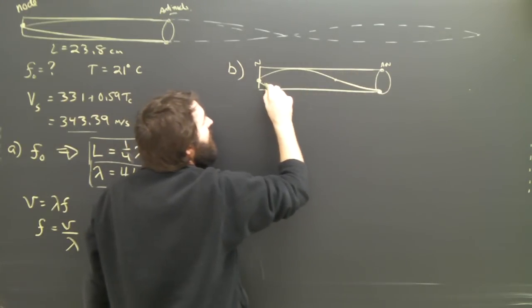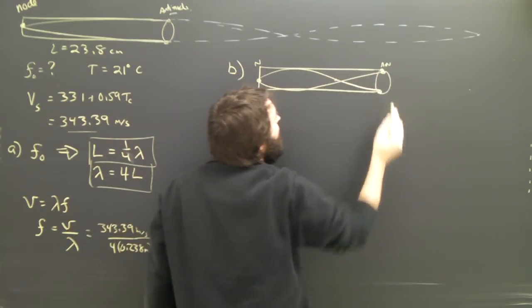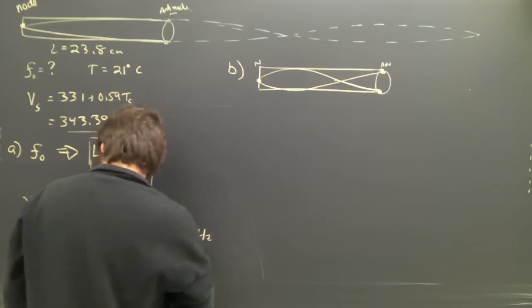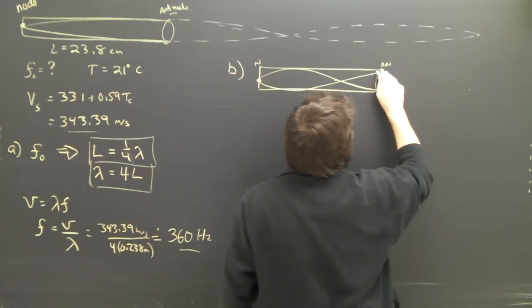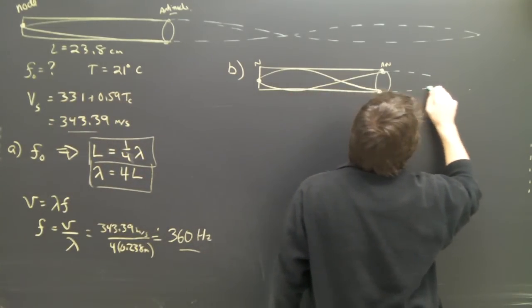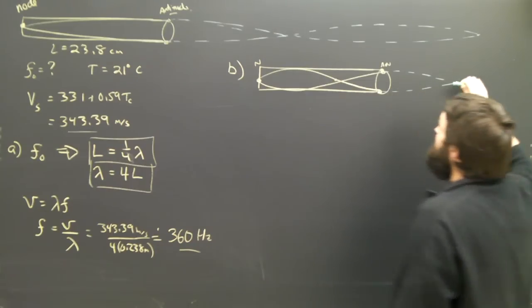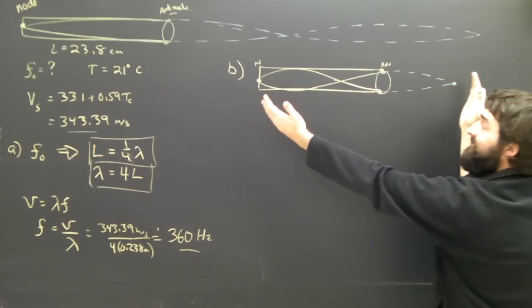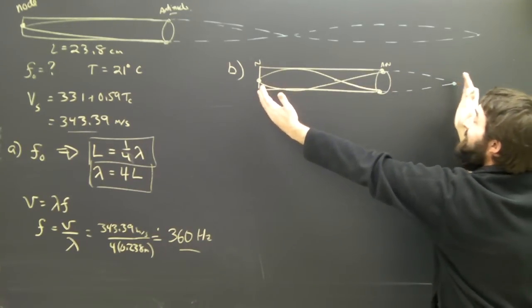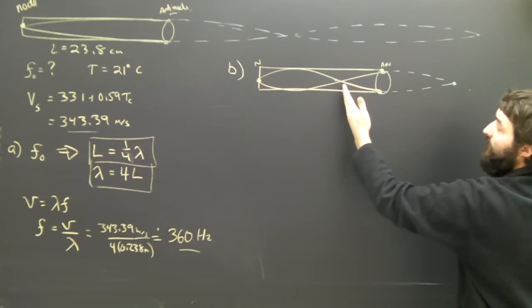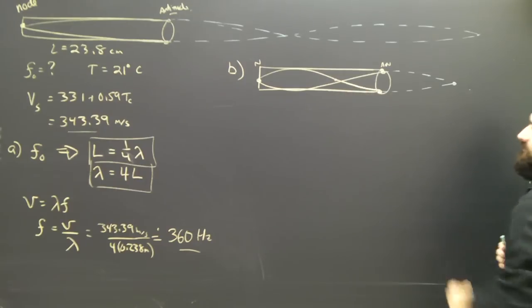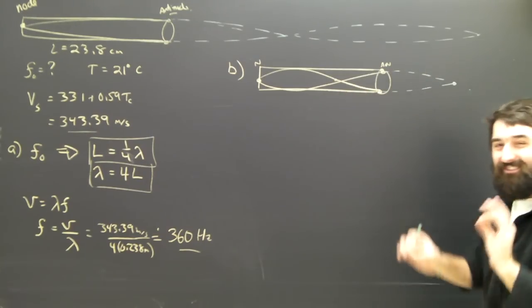With an anti-node there and an anti-node there. And carrying this on in the same manner as before, I can see that it would come together here again. So now I can see that the tube of the flute is still less than a full wavelength, but it's more than a half. It's three quarters.